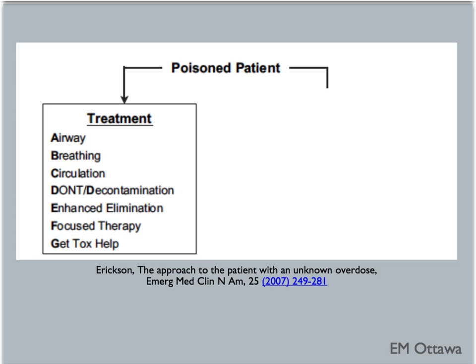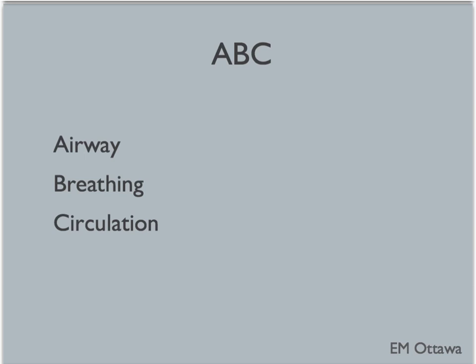The first step in the treatment arm consists of the basic approach to any patient in the emergency department: A, B, C. First, airway. As with all emergency patients, we must ensure their airway is patent. This might mean an intubation in the patient with a decreased GCS.